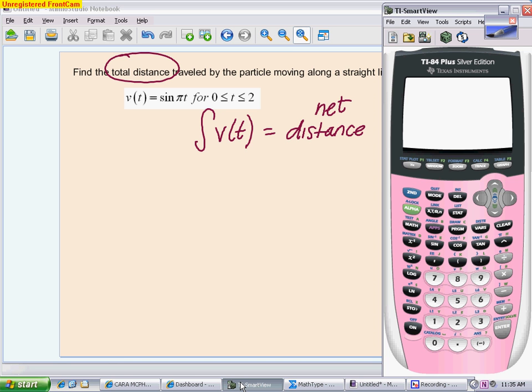First thing, make sure you're in radian mode. Hopefully, you already are. We're going to go into y equals, get rid of all the functions that you might have in there, and I'm going to replace it with my velocity equation, which is the sine of pi t. Obviously, I'm just typing in x.